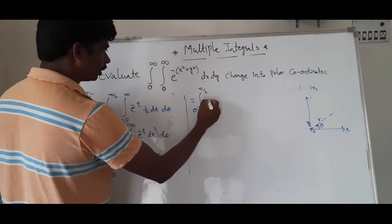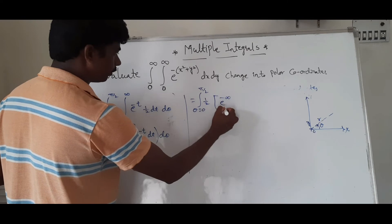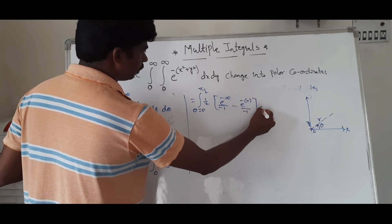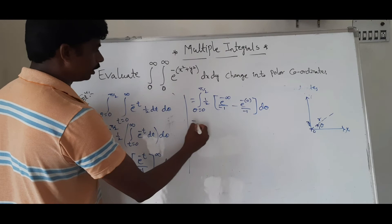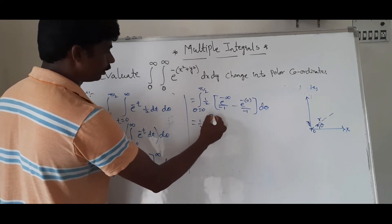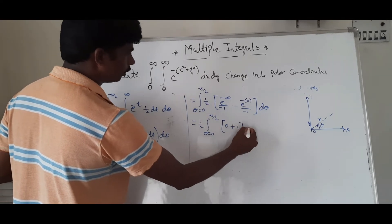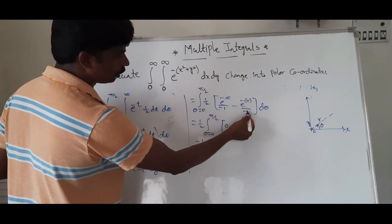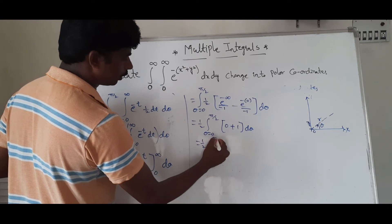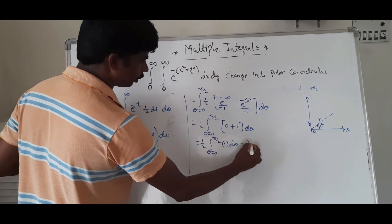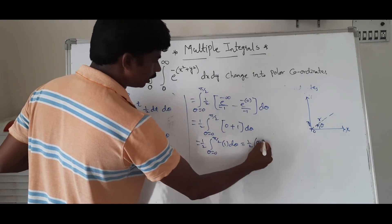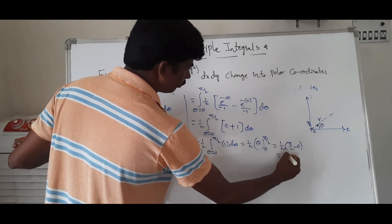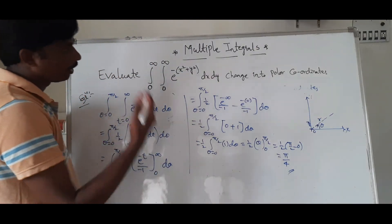Evaluating: (1/2) times [e^(−∞)/(−1) minus e^0/(−1)] times integral θ = 0 to π/2 dθ. Since e^(−∞) = 0 and e^0 = 1, this gives (1/2) times [0 − (−1)] = (1/2) times 1. Then (1/2) times [θ] from 0 to π/2 = (1/2) × (π/2 − 0) = π/4.